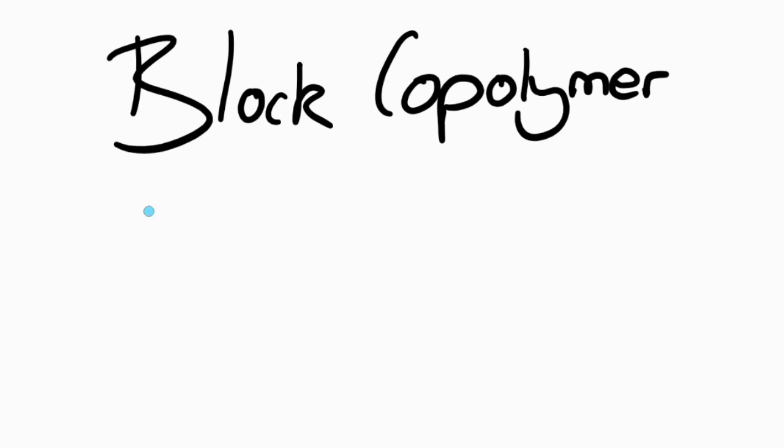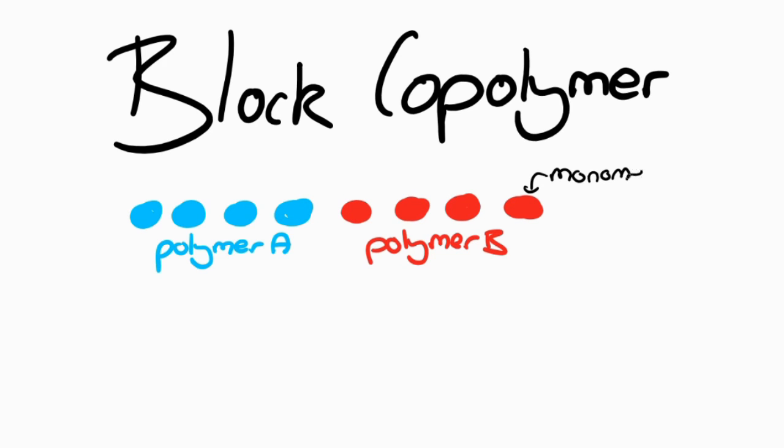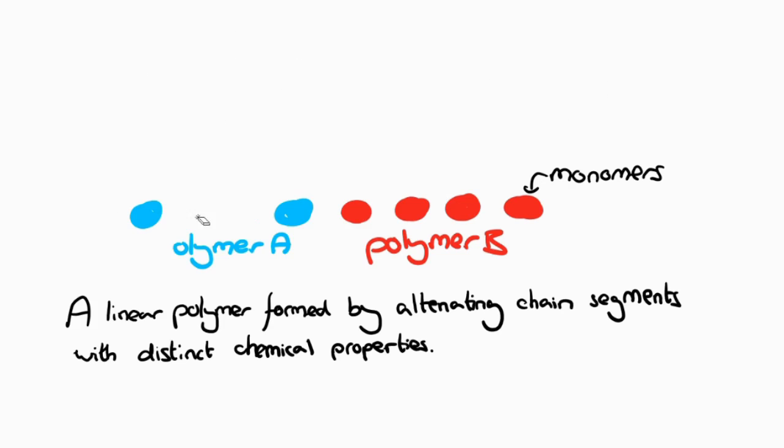we react our polymer with lactide to create a block copolymer, which is defined as a linear polymer formed by alternating chain segments with distinct chemical structures. By functionalizing PEG with polylactic acid, or PLA, we introduced ester linkages into the hydrogel network, which can be hydrolyzed by the body.